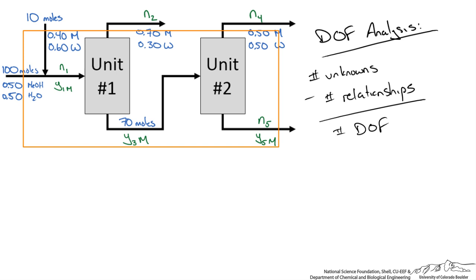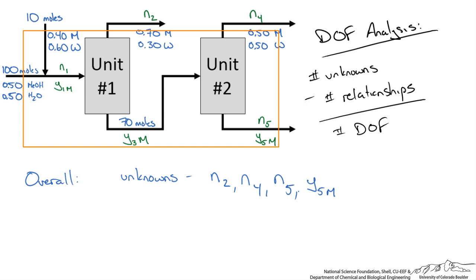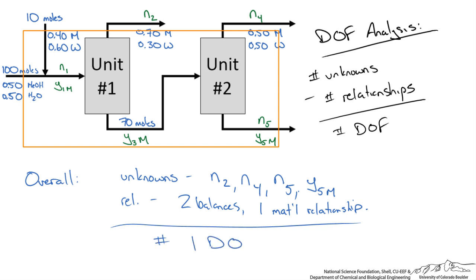Looking at the overall system balance, the unknowns are N2, N4, N5, and Y5M — 4 unknowns. Since we have 2 species we can write 2 independent material balances. We also have 1 relationship that N2 and N4 are equal. That gives us 4 unknowns minus 3 relationships, leaving 1 degree of freedom. So we cannot start with an overall balance.